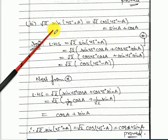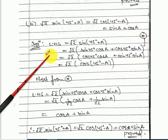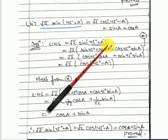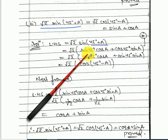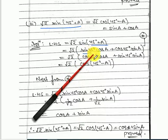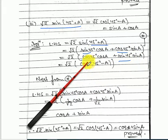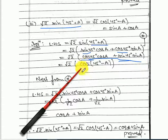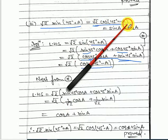Next: root 2 times sin(45 plus A) equals root 2 times cos(45 minus A) equals sin A plus cos A. Start with the left hand side. Apply the formula for sin(A plus B): you get sin 45 times cos A plus cos 45 times sin A. Since sin 45 equals cos 45, rewrite to get cos 45 times cos A plus sin 45 times sin A, which is cos(45 minus A). The first part is proved.